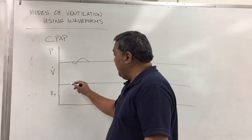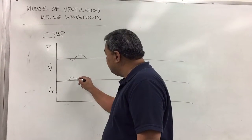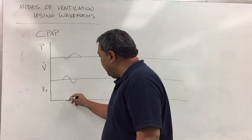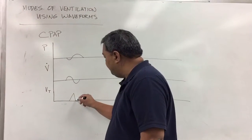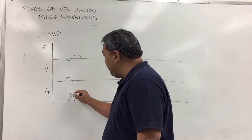However, the flow is somewhat the opposite, so the flow goes like this, and then you have a certain volume. Let's say that volume is 300.